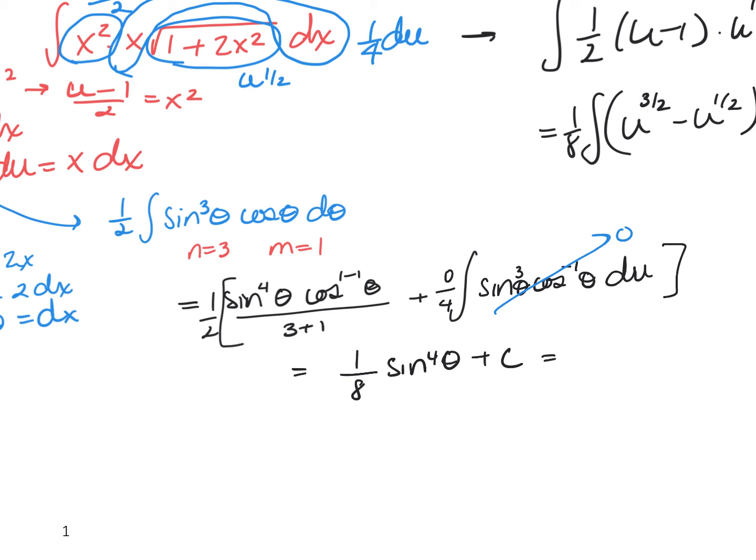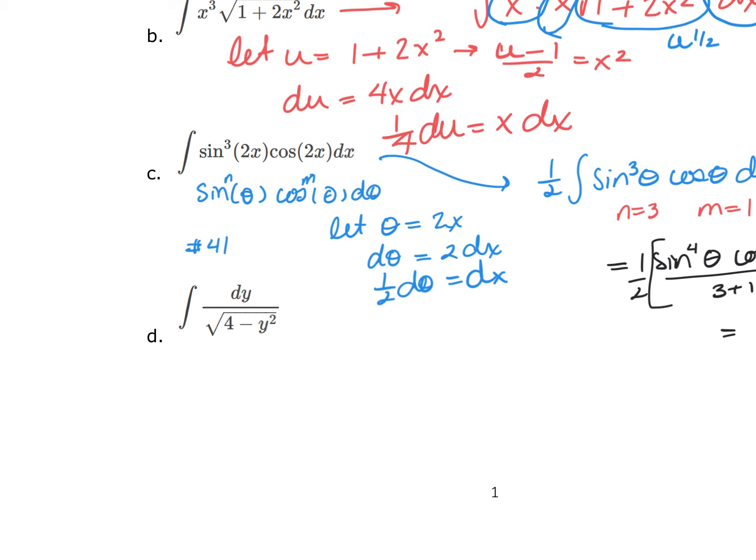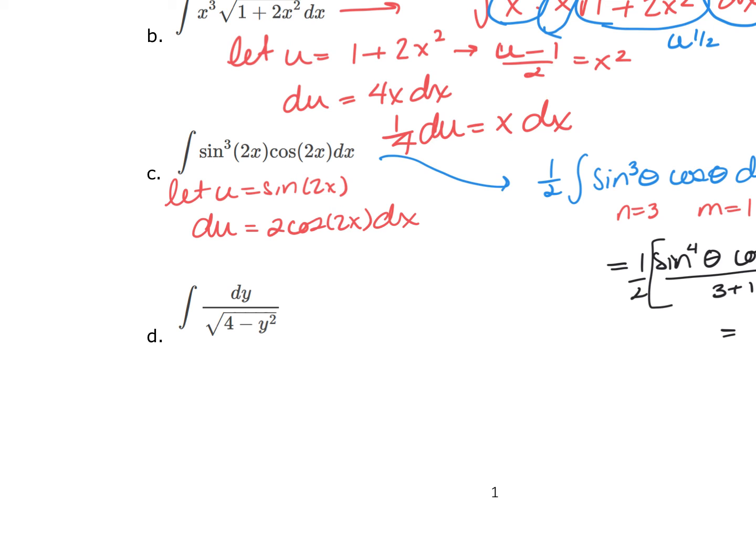Now, all I have to do is back sub, so I have 1 eighth, the sine raised to the fourth of my 2x plus c. Now, I did this by using the table of integrations because it matched number 41, but I could have just as easily back here said, wait a minute, let's let u equal the sine of 2x, then du would equal the 2 cosine of 2x dx, and I probably actually would have done that, but I can use the table of integrations for that one.